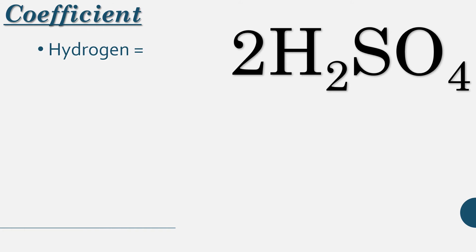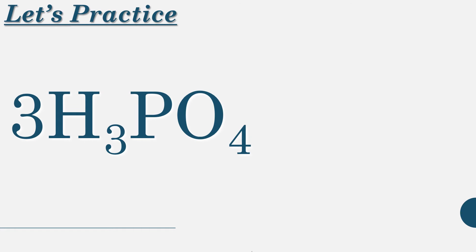So just showing you guys that again. If we do our distributive property with our understood 1, we'll be able to figure this out quite quickly. Let's practice with one. We're going to do the understood 1. Let's start out with that. We're going to identify our elements. We have hydrogen, phosphorus, and oxygen. Doing the distributive, 3 times 3 is 9, 3 times 1 is 3, 3 times 4 is 12.